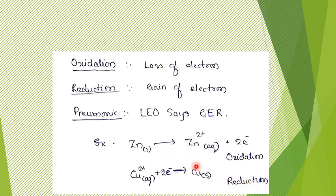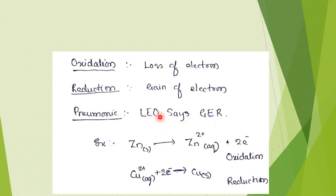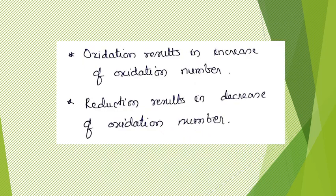In electrochemistry, if you have studied galvanic cells, these two reactions happen simultaneously: copper 2+ accepts electrons donated by zinc. So whenever a species undergoes oxidation, there should be some other species ready to accept electrons. Similarly, if a species undergoes reduction, there should be a species capable of donating electrons. For remembering this, the mnemonic LEO GER is given: Loss of Electron is Oxidation, Gain of Electron is Reduction.